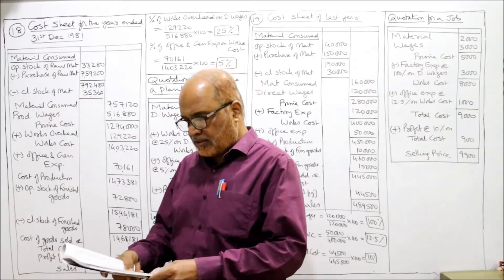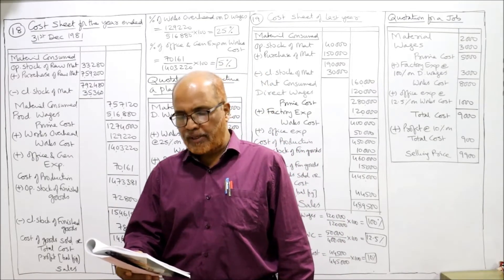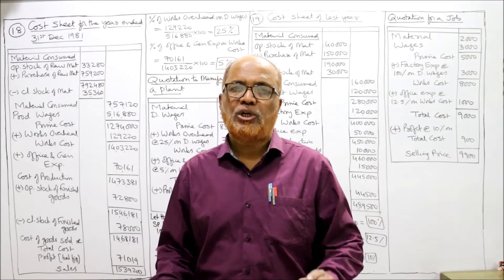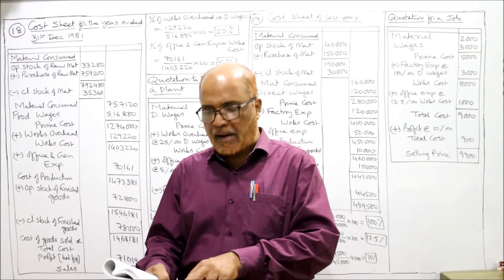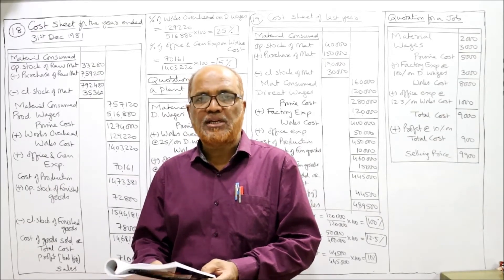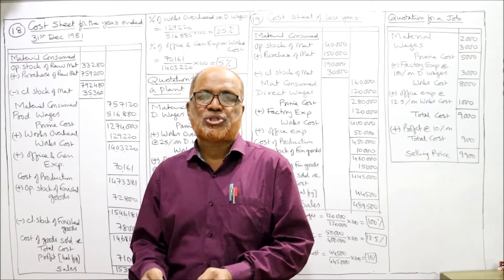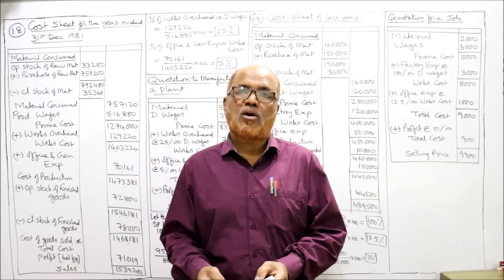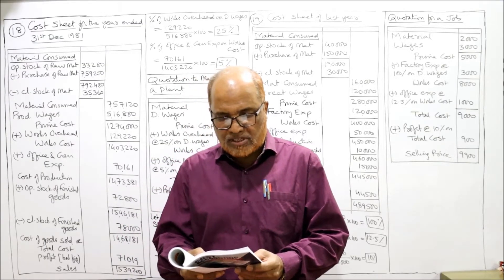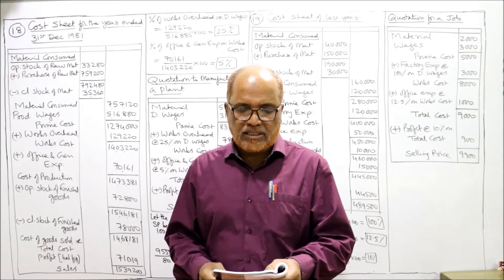To get the maximum benefit from the lectures, now we'll start the next problem — Problem number 18. See the problem: from the following particulars you are required to prepare a statement showing (A) the cost of material consumed, (B) prime cost, (C) works cost, (D) total cost. These are the items that should be shown in the statement of cost, and the percentage of works overhead on productive wages — we have to calculate the percentage of works overhead, meaning factory overhead on direct wages.